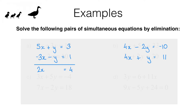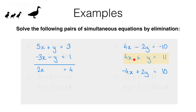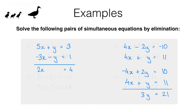Let me quickly show you what I mean. What we can do is multiply the first equation through by negative 1, and that gives me negative 4x plus 2y equals positive 10. Writing the second equation underneath gives me 4x plus y equals 11. Now we've got a negative 4x and a 4x, so when we add these equations together the x's will eliminate. In this video we're going to look at more pairs of equations where you might have to manipulate one or both of them before adding.